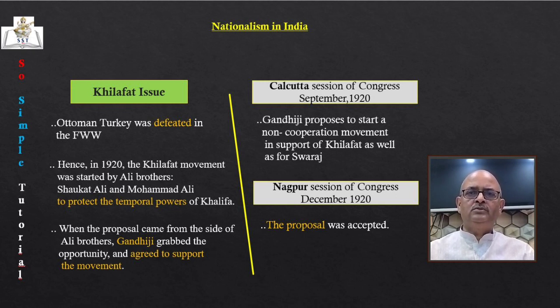Council elections were boycotted in most provinces except Madras, where the Justice Party — representing non-Brahmin interests — participated in elections since Congress was boycotting them. Foreign goods were boycotted, liquor shops were picketed, and foreign clothes were burned in huge bonfires. Khadi became a symbol of freedom. The import of foreign cloth halved between 1921 and 1922 — in value, dropping from Rs. 102 crore to Rs. 57 crore.